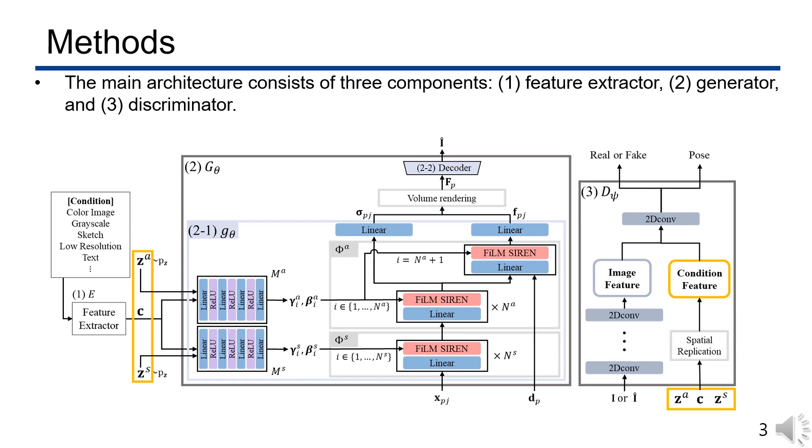As an input, the global feature vector extracted from the input condition is fed to the network along with the noise codes randomly sampled from a Gaussian distribution.